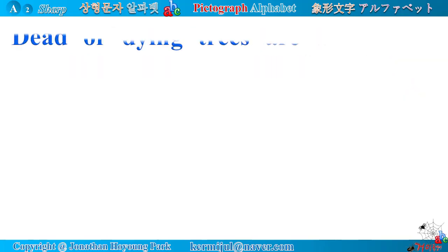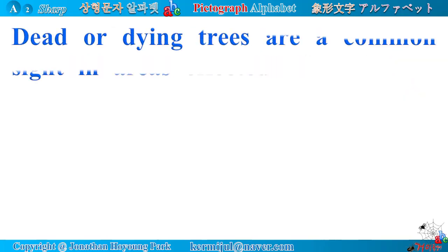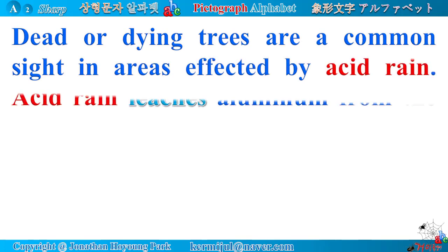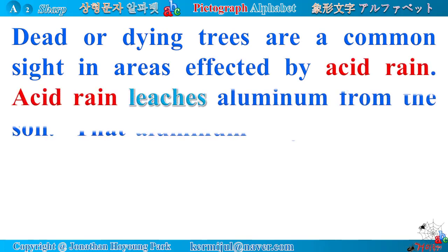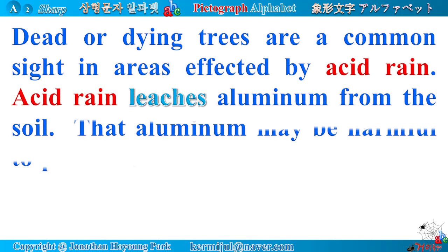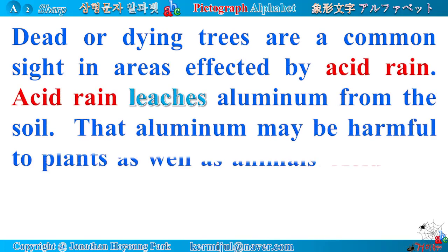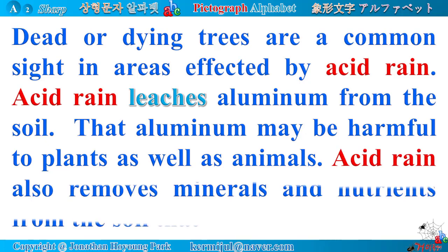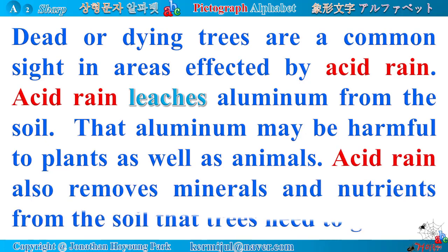Dead or dying trees are a common sight in areas affected by acid rain. Acid rain leaches aluminum from the soil, which may be harmful to plants as well as animals. Acid rain also removes minerals and nutrients from the soil that trees need to grow.